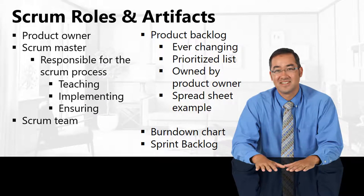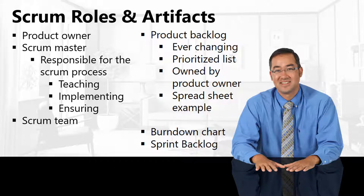Getting more in depth into Scrum roles and artifacts: the Scrum roles are the product owner, the Scrum master — who is responsible for the entire Scrum process, from teaching and implementing to ensuring everything runs smoothly during stand-up calls — and the Scrum team. Artifacts are simply the documentation: the issue log, the product backlog (an ever-changing prioritized list owned by the product owner), the burndown chart, and the sprint backlog.